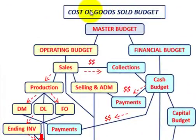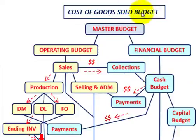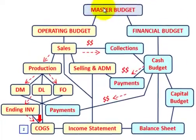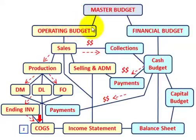What we're going to be going over here is the cost of goods sold budget, and we'll go through our comprehensive example to calculate it. We start out with our master budget, and under our master budget we have our operating budget and our financial budget. Our cost of goods sold is going to be under our operating budget.